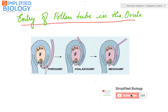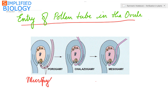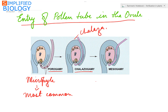There are different ways by which the pollen tube enters the ovule. One is directly through the micropyle, known as porogamy, which is the most common type. Second is through the chalaza, referred to as chalazogamy. Third is through the integuments, which is referred to as mesogamy.